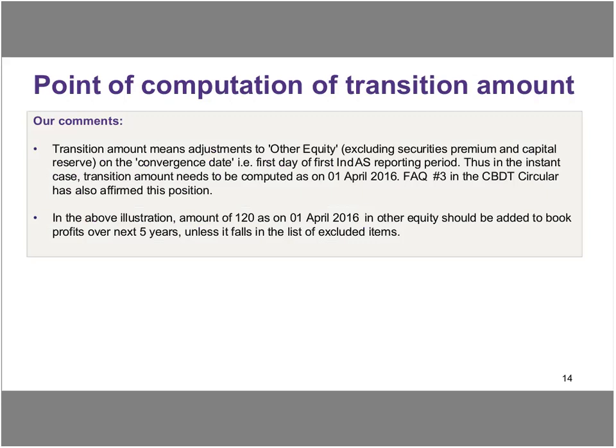The board has clarified that 1st of April 2016, beginning of business, is the same as close of business on 31st March 2016. Therefore in the above illustration, an amount of 120 as of 1st of April 2016 would be added back to the profits over a period of five years. While some may say this clarification was not really required, it's really a convergence between an accountant and a tax expert, because from an accounting perspective the transition date was 1st April 2015 in this example, whereas from a tax perspective 1st April 2016 is the all-important date. Through this clarification, they've really converged the two views.